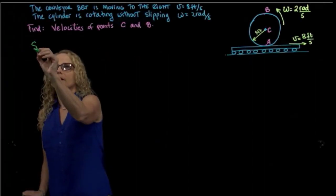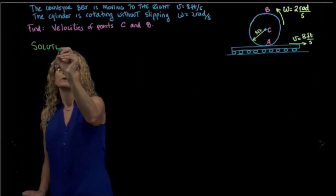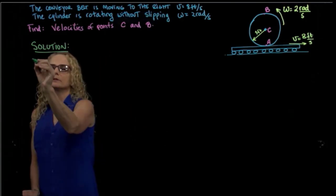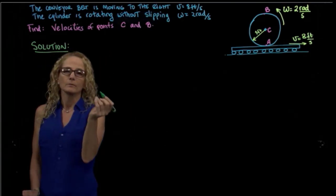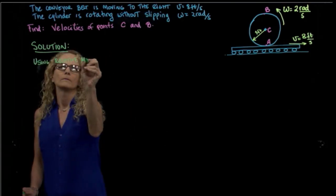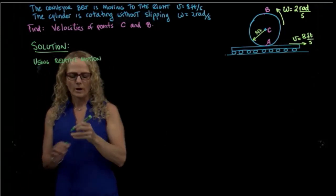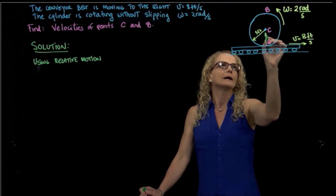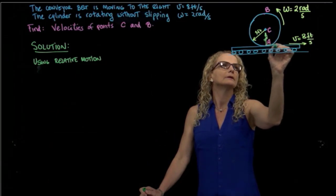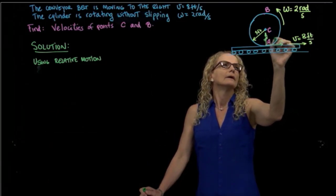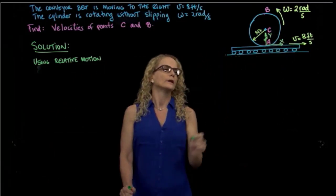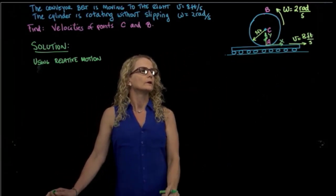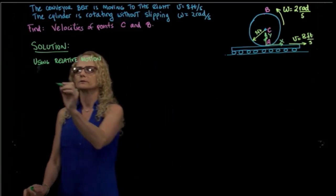I will use two different approaches. The first approach is using relative motion. I will place a coordinate system attached to the disc at point A, with the origin at point A, and I will find the velocity of C using that system.